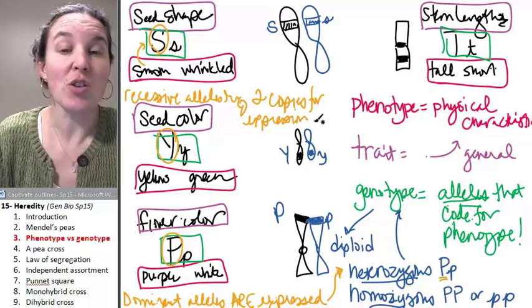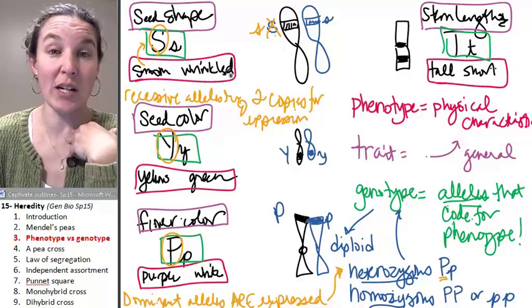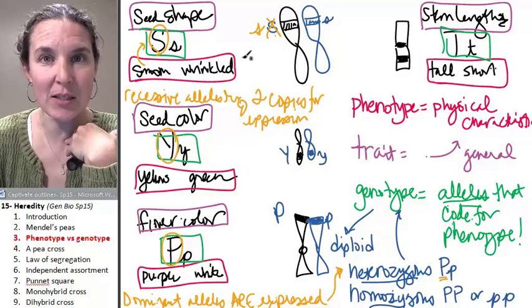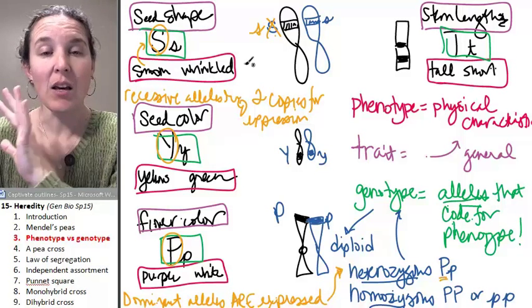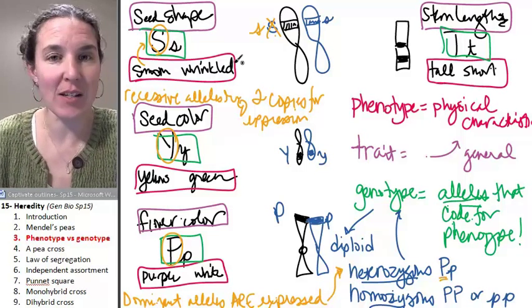So if you're going to express the recessive trait of a wrinkled seed, then you need two little s copies of the allele, one from mom, one from dad. You have to remember your meiosis in order for any of this to make sense.